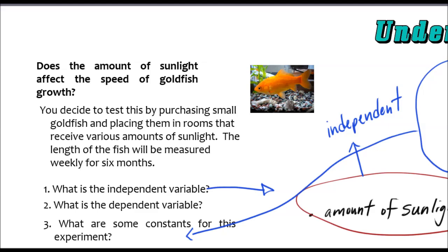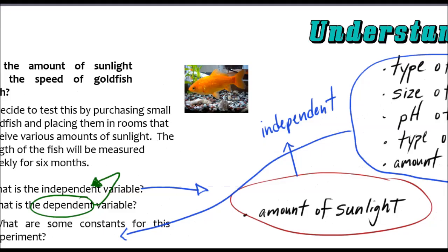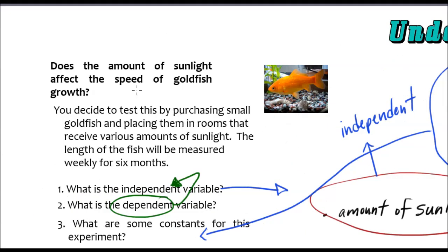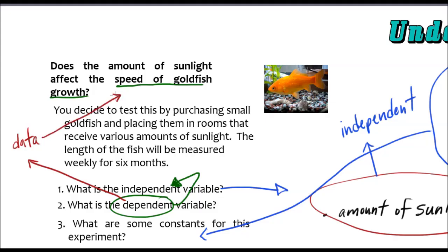The only other part to talk about is the dependent variable. The dependent variable in an experiment depends on the independent variable. You're going to have to measure if there's an effect of the sunlight — we're going to measure the speed of goldfish growth, how fast those goldfish are growing, the rate of growth. The dependent variable gives you data. Think of that D sound — dependent, data. It gives you numbers. Our numbers in this case are the rates of goldfish growth.